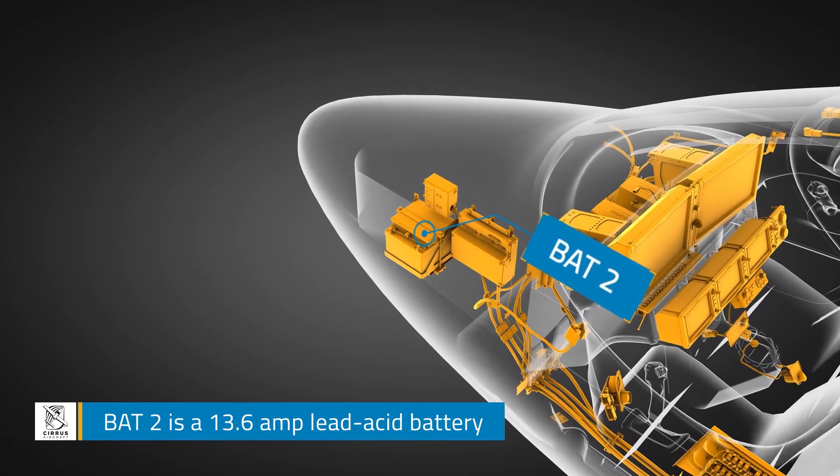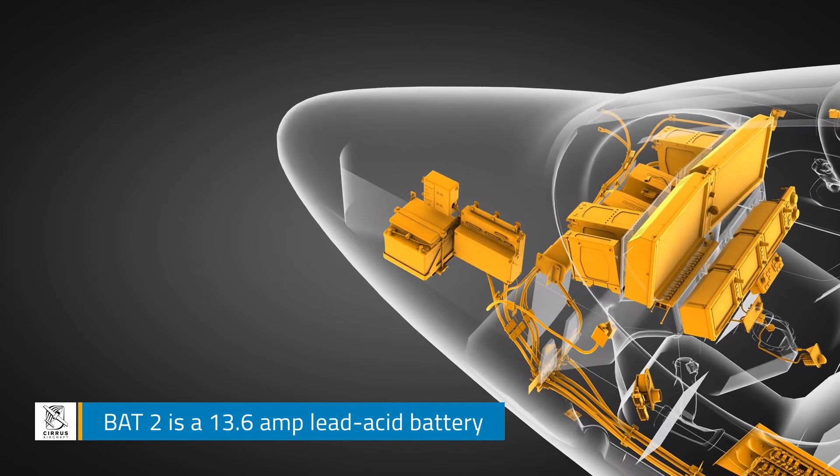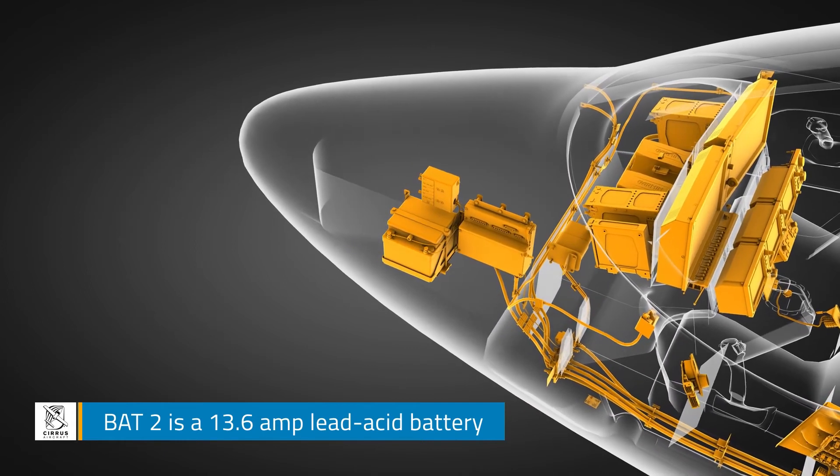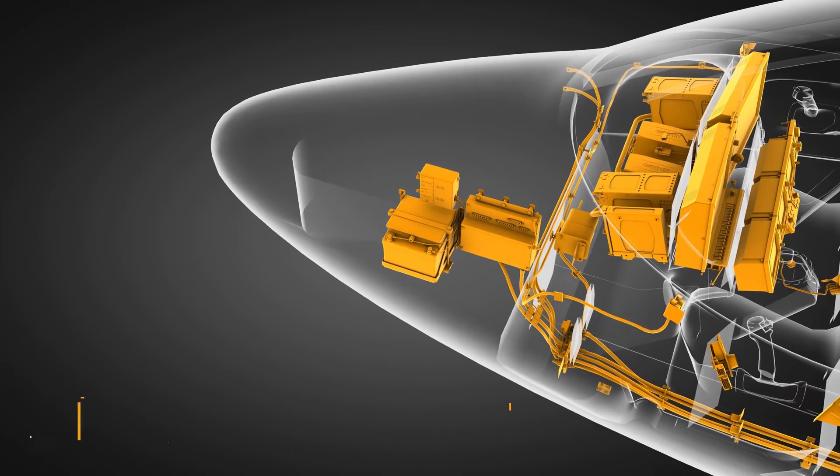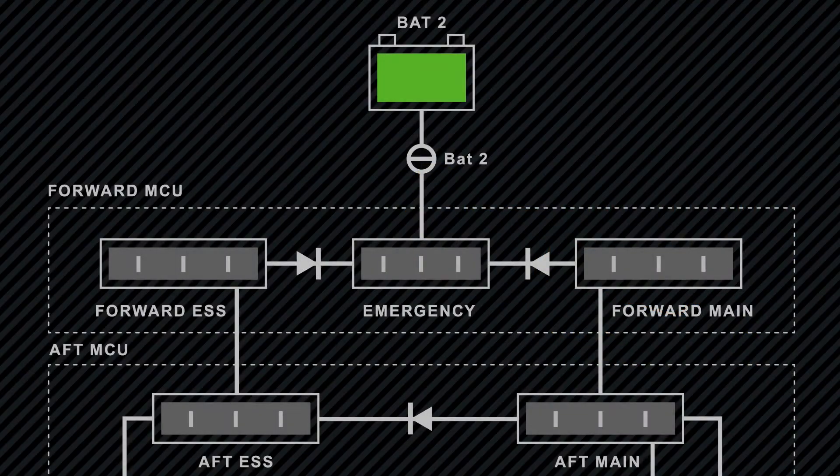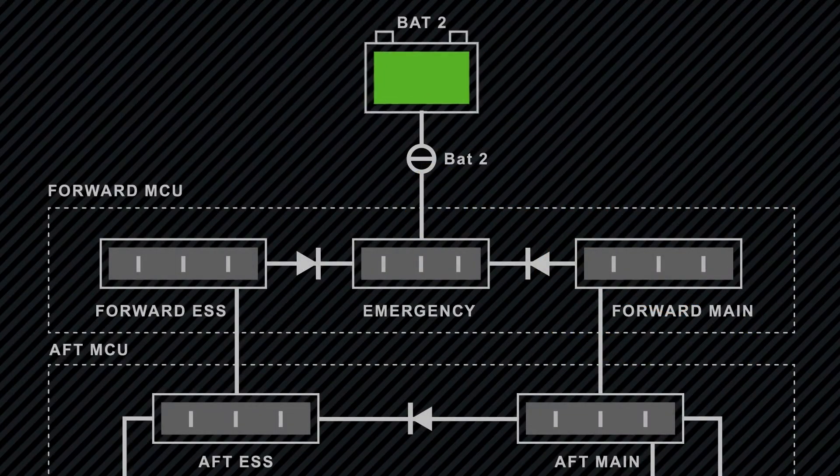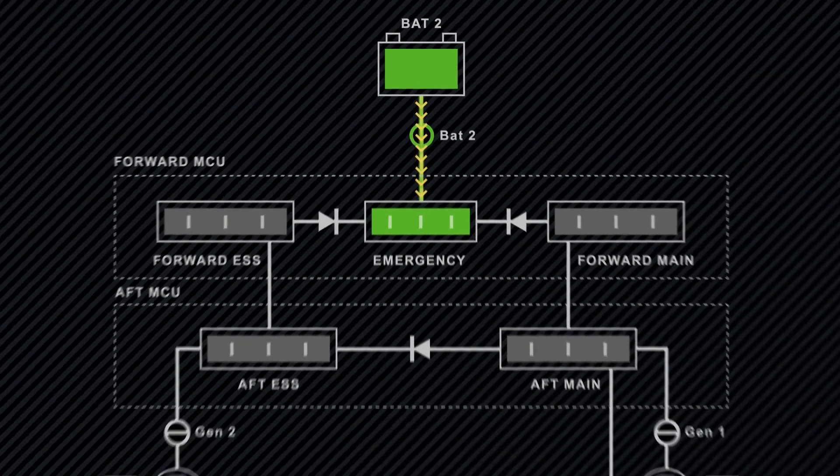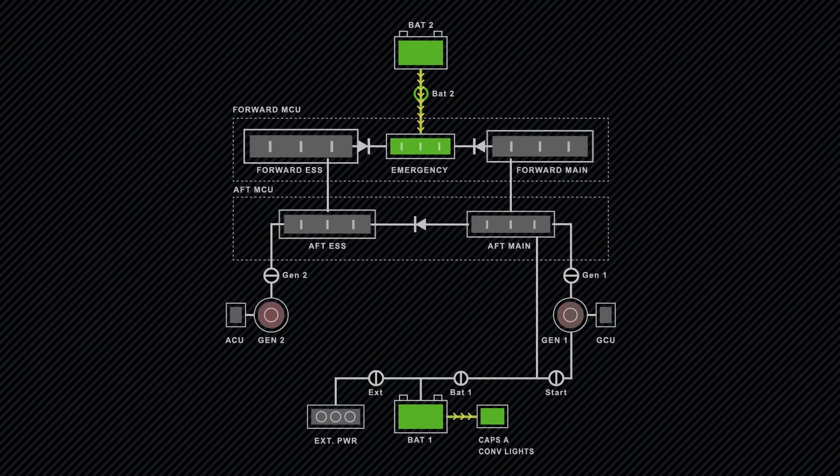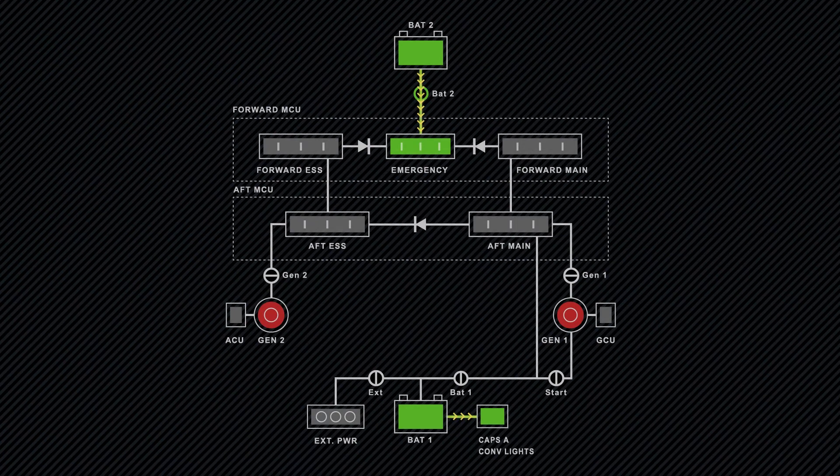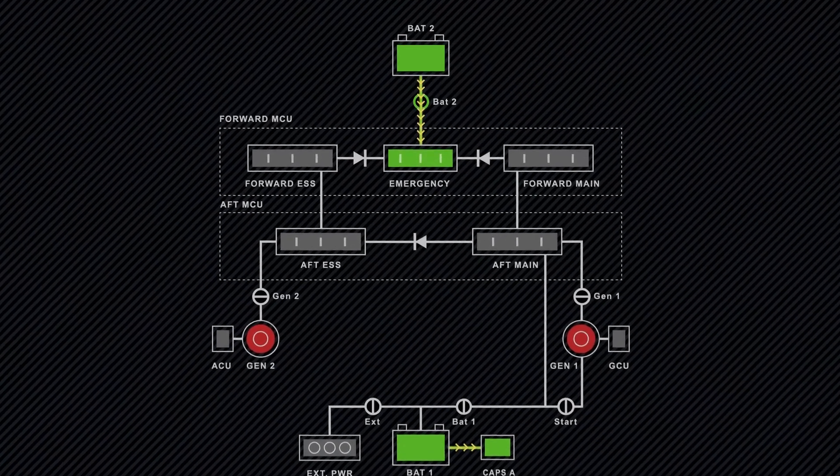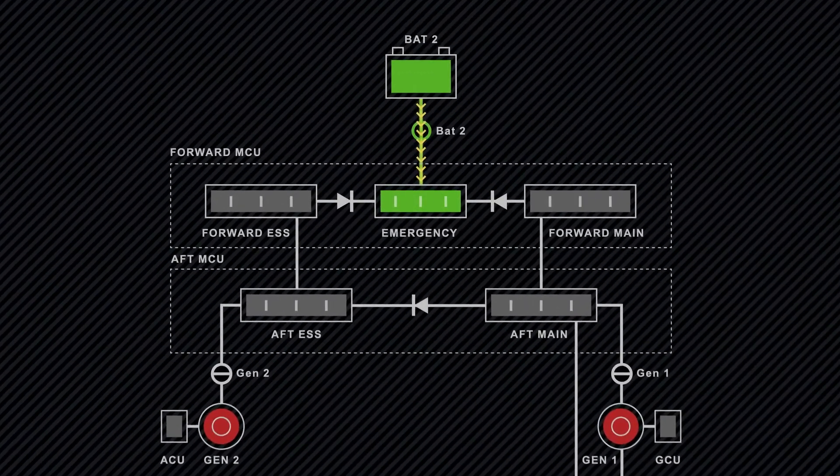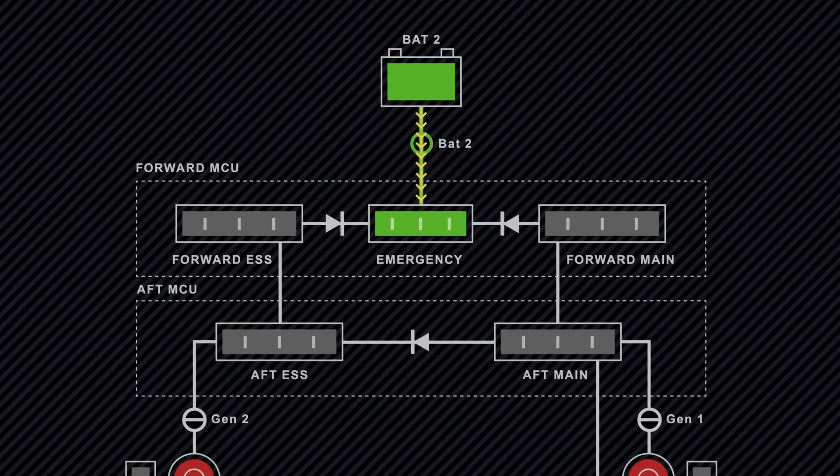BAT2 is a smaller, 13.6-amp lead-acid battery mounted in the nose compartment on the left-hand longeron and charged via the emergency bus. BAT2's primary purpose is to power the emergency bus in the event both generators and BAT1 are lost. In this scenario, all main and essential loads would automatically be shed in order to preserve BAT2, thereby ensuring the continued function of all emergency bus systems and equipment for as long as possible.